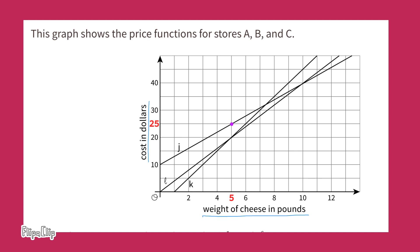I could write an equation or function to calculate the cost of a particular amount of cheese at this store. Five times what number plus ten equals twenty-five. Since we're talking about line J, I'll replace the question mark with J. This is a two-step equation, and I'd like to find the value of J by getting J by itself on the left-hand side. First, I'll get rid of the positive ten by subtracting ten from both sides.